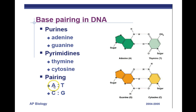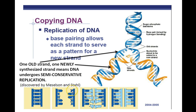When copying DNA, we have one old strand and one newly synthesized strand in each new DNA molecule. This is called semi-conservative replication. Semi means half, conservative means to keep the same, so semi-conservative means half of the DNA molecule has been conserved — and the other half is brand new.